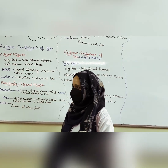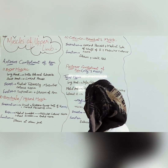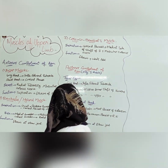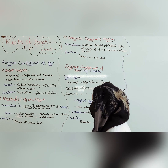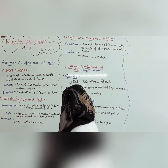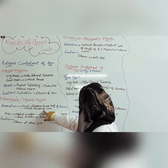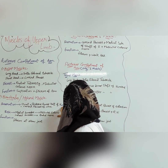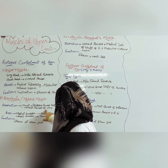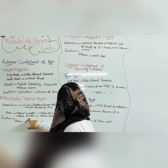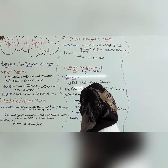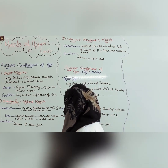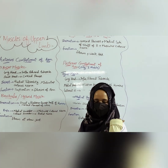The next muscle is the brachialis, also known as the workhorse muscle. Its innervation is dual. It originates from the posterior lower shaft of the humerus. The coracoid process of the ulna is its insertion. The medial border is supplied by the musculocutaneous nerve and the lateral border by the radial nerve. Its function is flexion at the elbow joint.